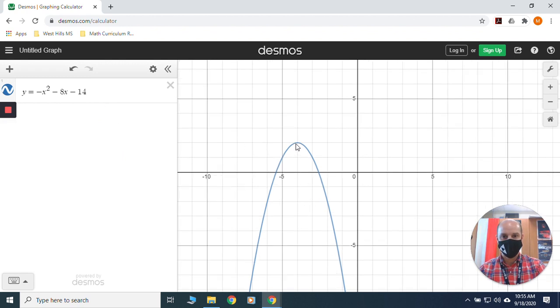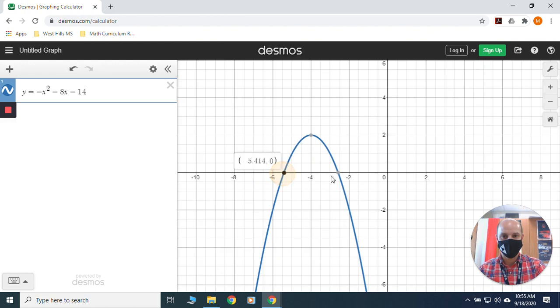I need to, again, get my x-intercepts. I'm going to come over here, click a couple times. I got an x-intercept there. Come over here, click. I got an x-intercept there. So I got these two x-intercepts of negative 5.414 and negative 2.586.